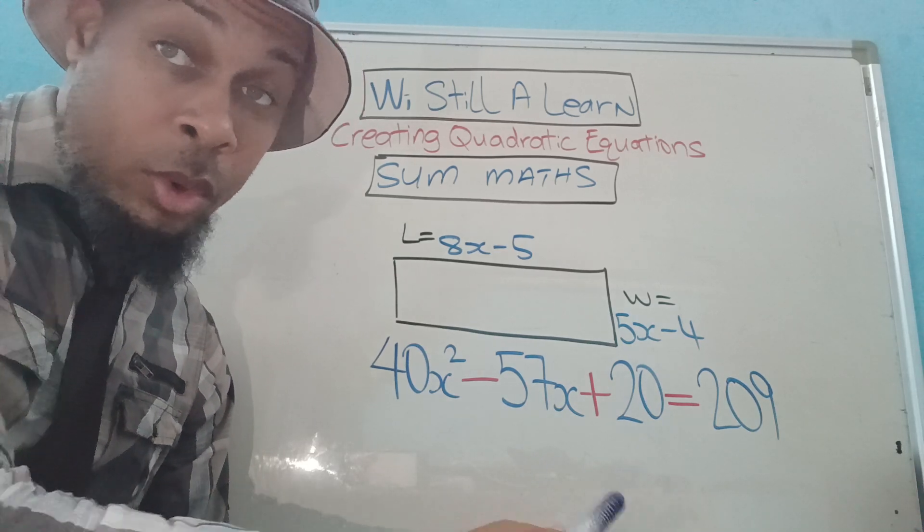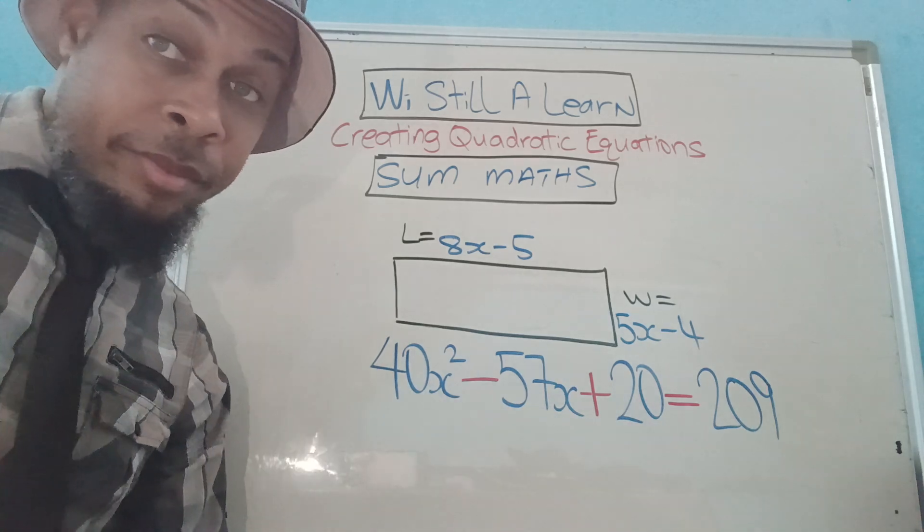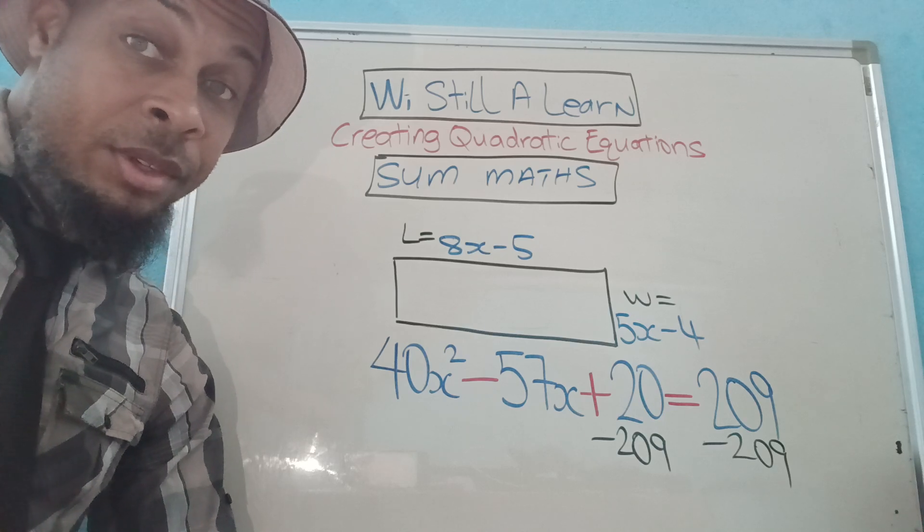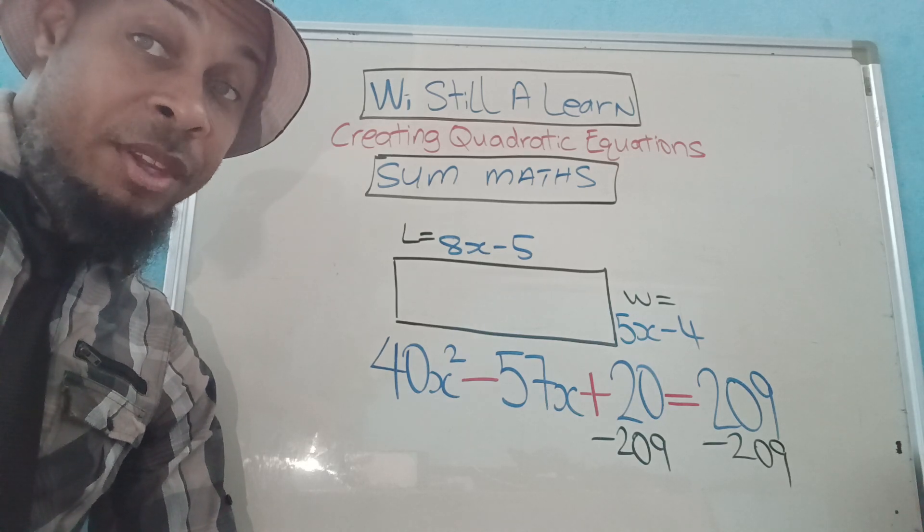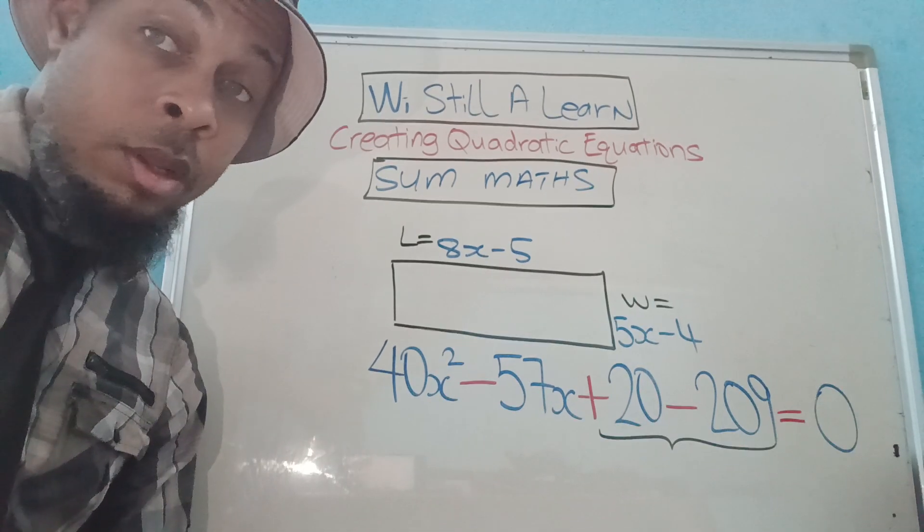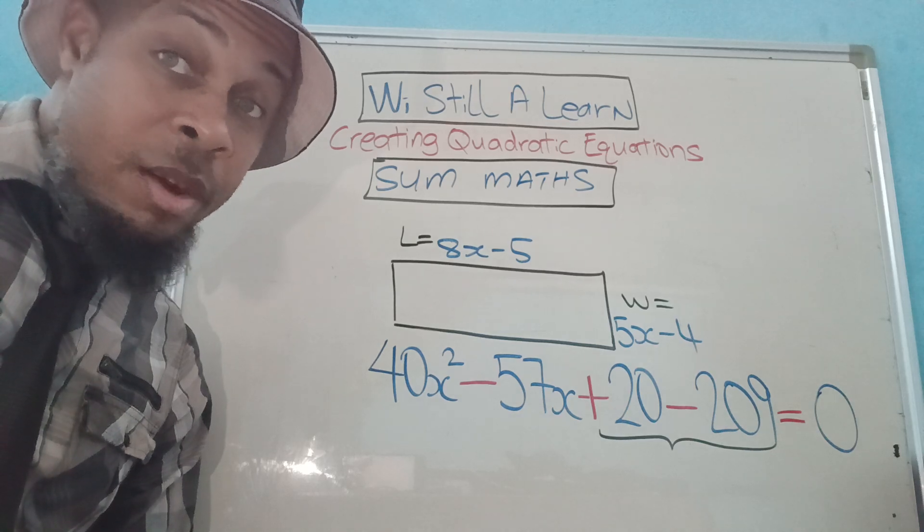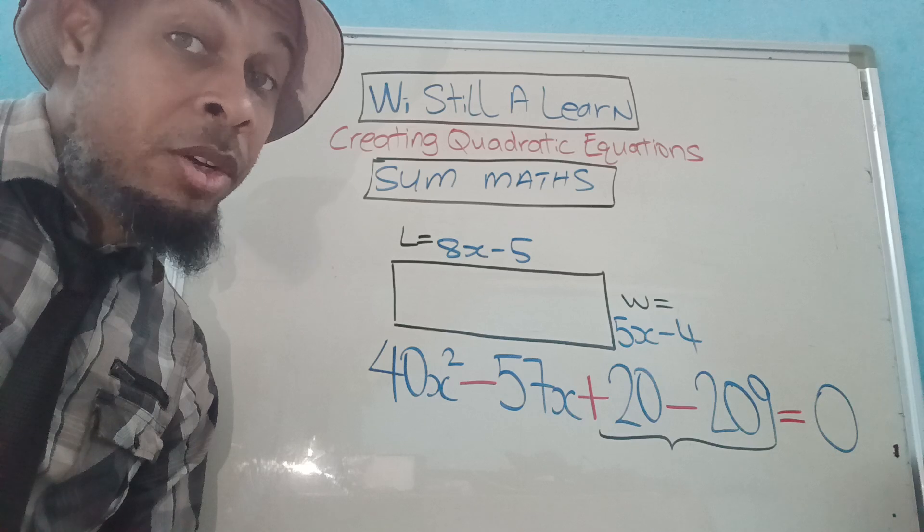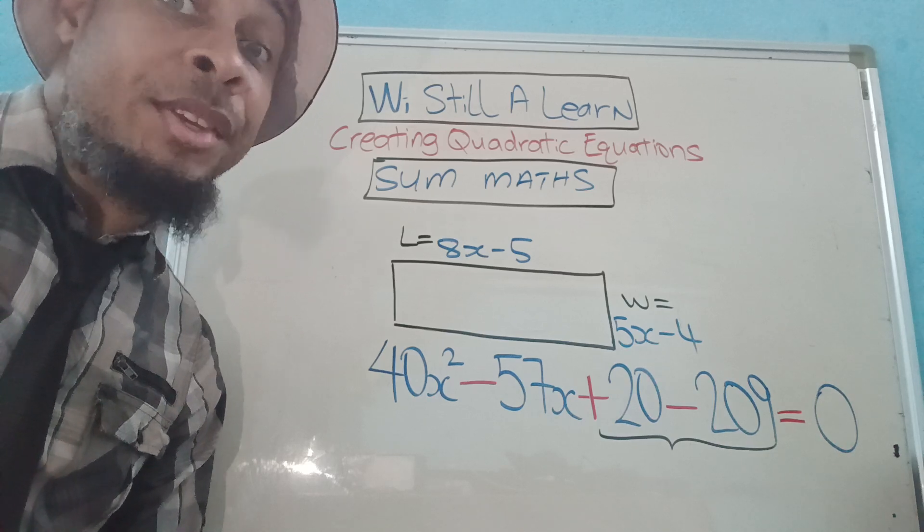Now look at what we do next. We minus 209 from both sides. Now what happens after that? We have to be very careful about what we do right here. 20 minus 209, yes, you're...